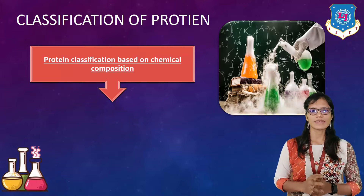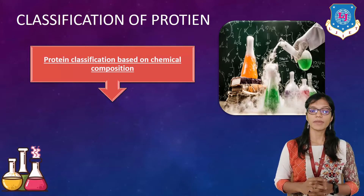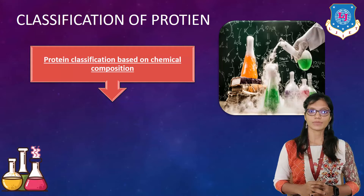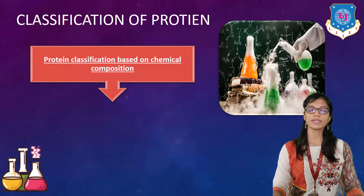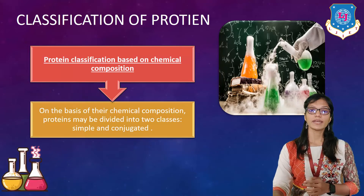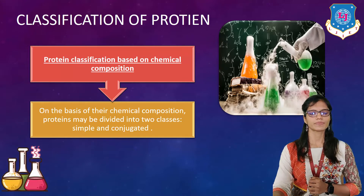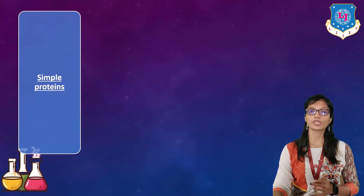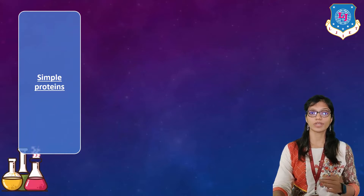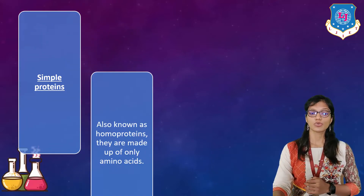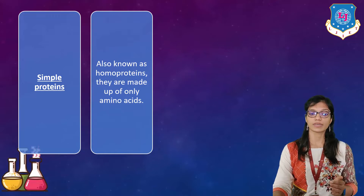The first protein classification will be done based on chemical composition. Based on the chemical composition of protein, proteins can be divided into two main classes: number one, simple; number two, conjugated. Simple proteins are also known as homoproteins. They are made up of only amino acids.